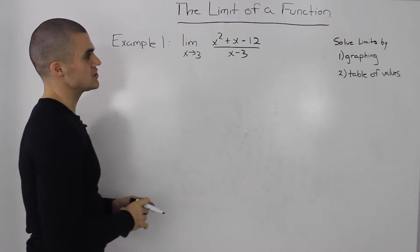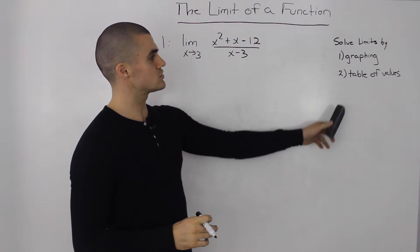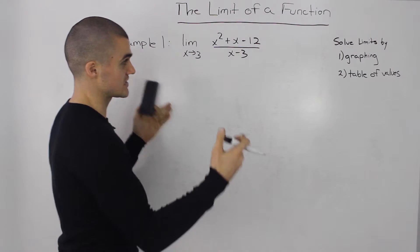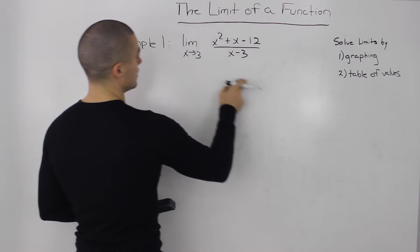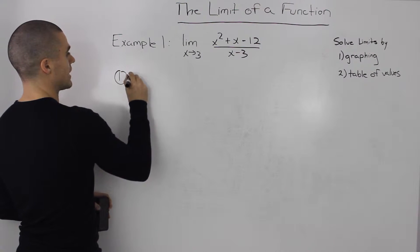In this chapter you're going to solve limits by two different approaches. You can either graph the function and see visually what it's approaching, or you can use a table of values. For this example, let's do it by graphing.